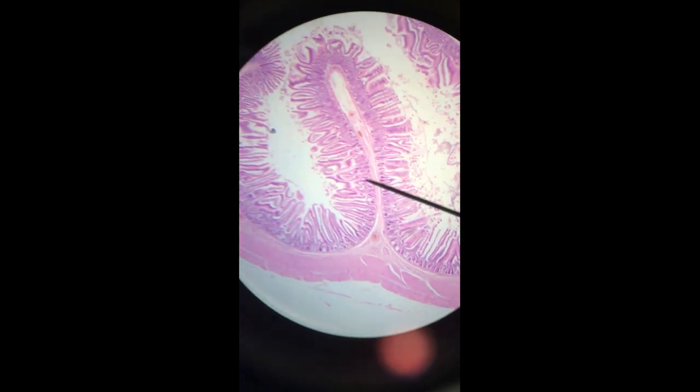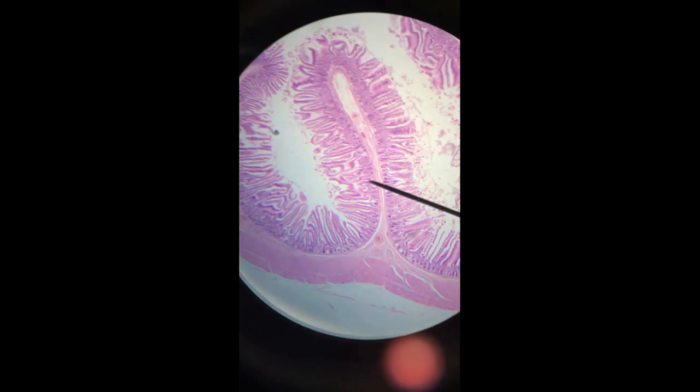That's the muscularis mucosae and it's shorter than this lamina propria. Oh, don't disappear. Shorter than the lamina propria and the epithelium and so they cinch up to make those folds.